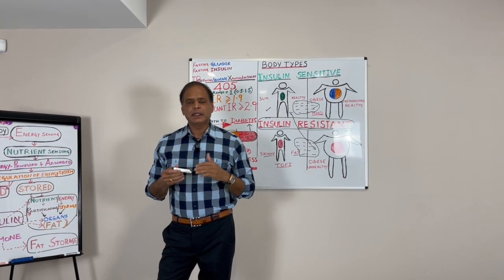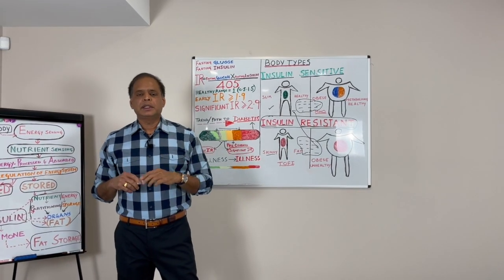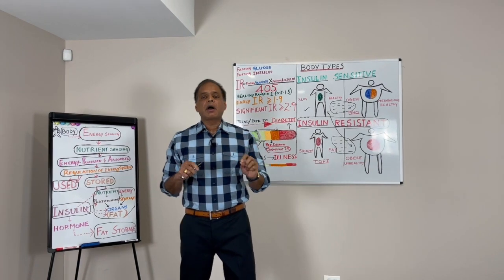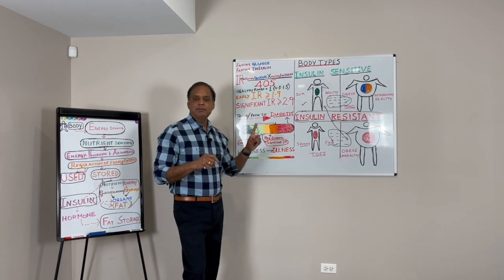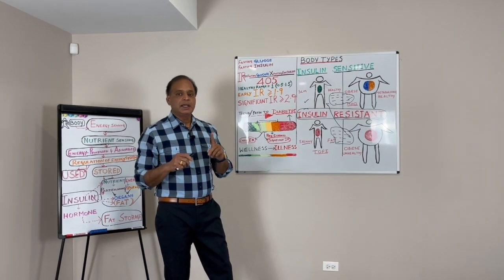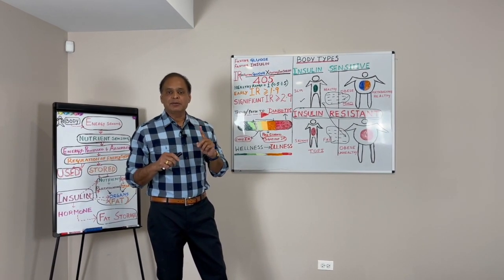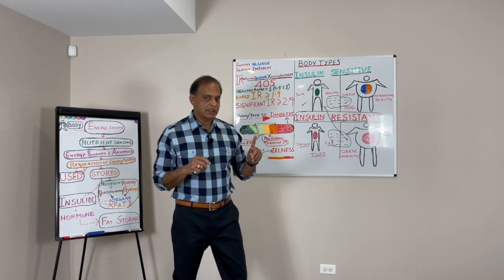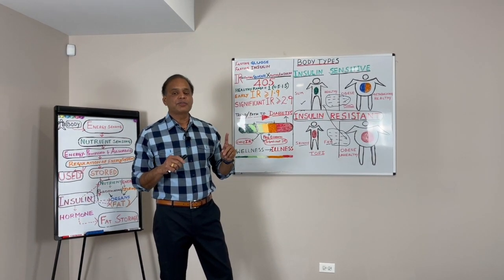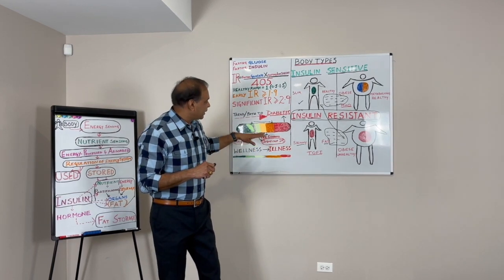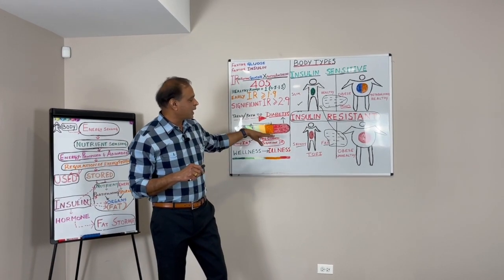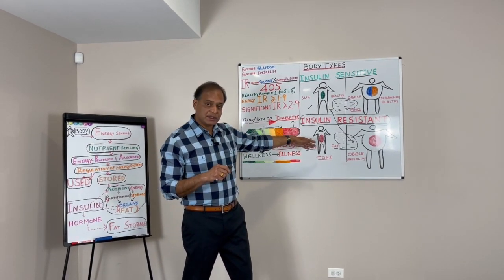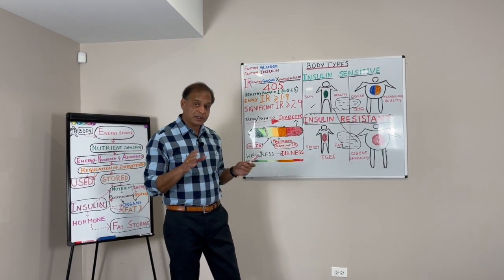The key take-home point is: diabetes is not a problem of glucose. I repeat — diabetes is not a problem of glucose. I am talking about adult type 2 diabetes. Diabetes is a problem of insulin. This metabolic dysfunction is very important for all of us to understand in answering that profound and beautiful question.